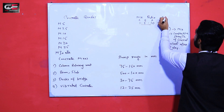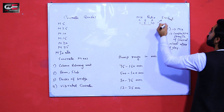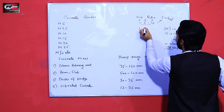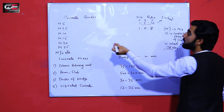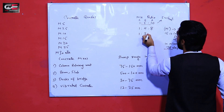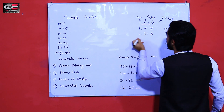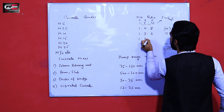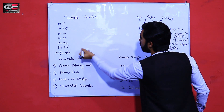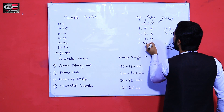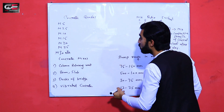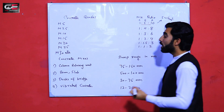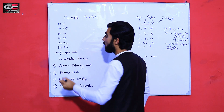M5 concrete will give you a strength of 5 Newton per mm² after 28 days. The M7.5 ratio is 1:4:8, M10 ratio is 1:3:6, M15 ratio is 1:2:4, M20 ratio is 1:1.5:3, and M25 ratio is 1:1:2.